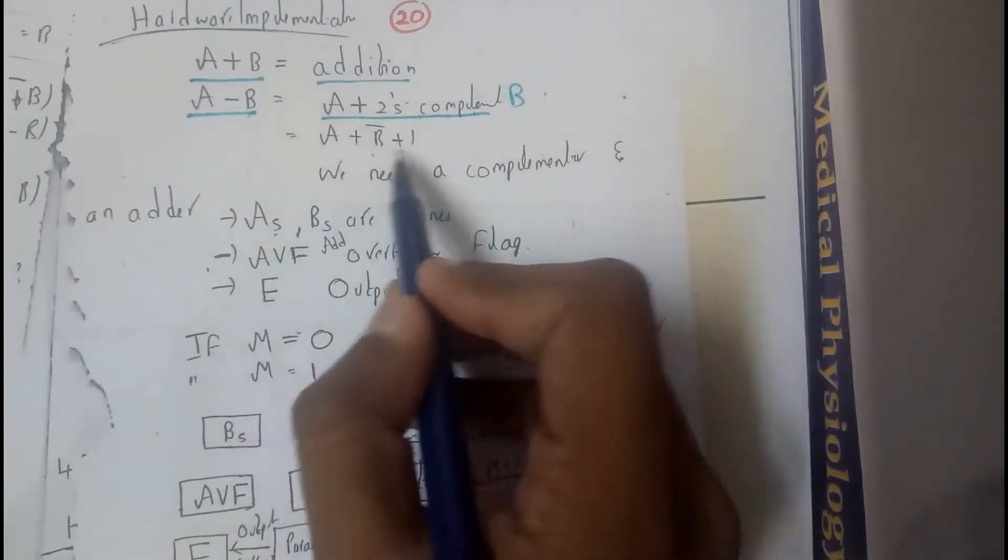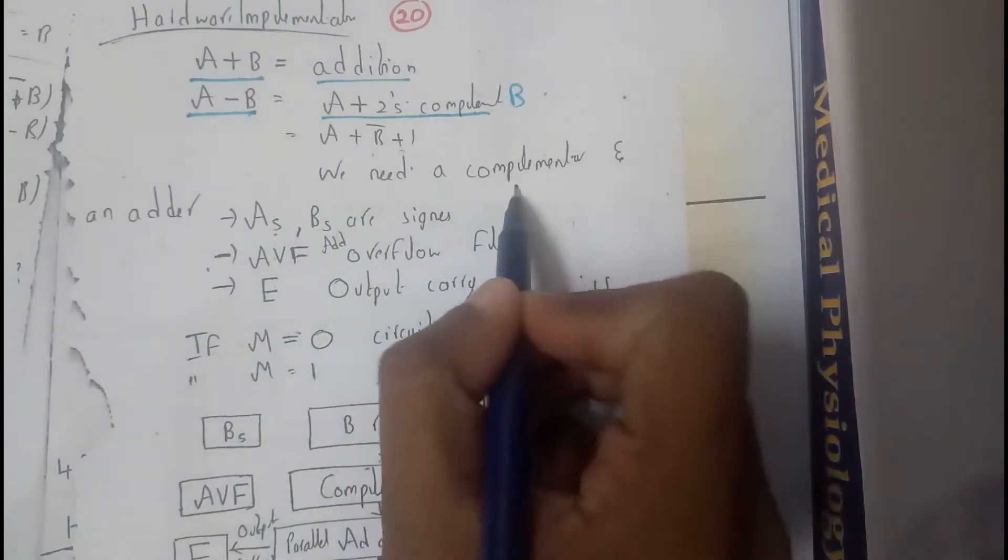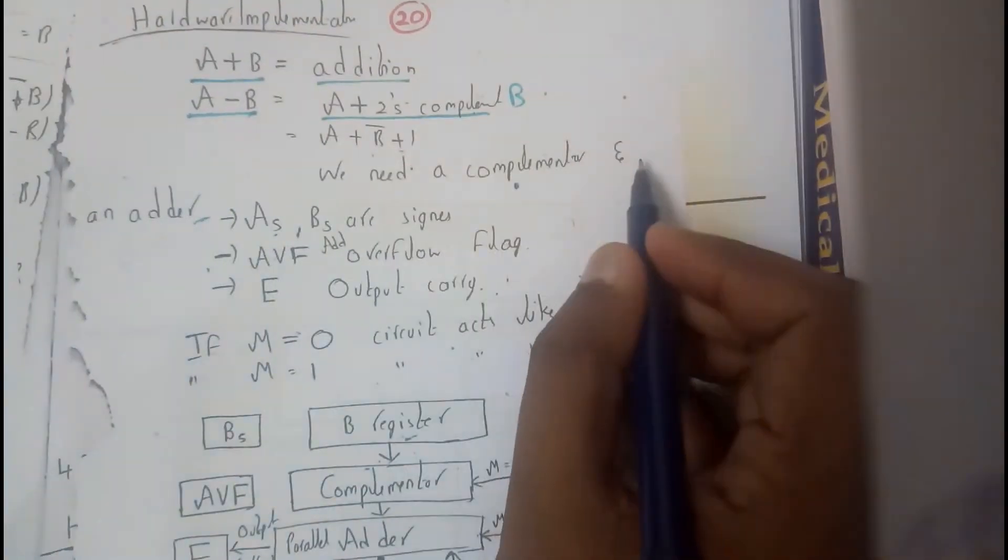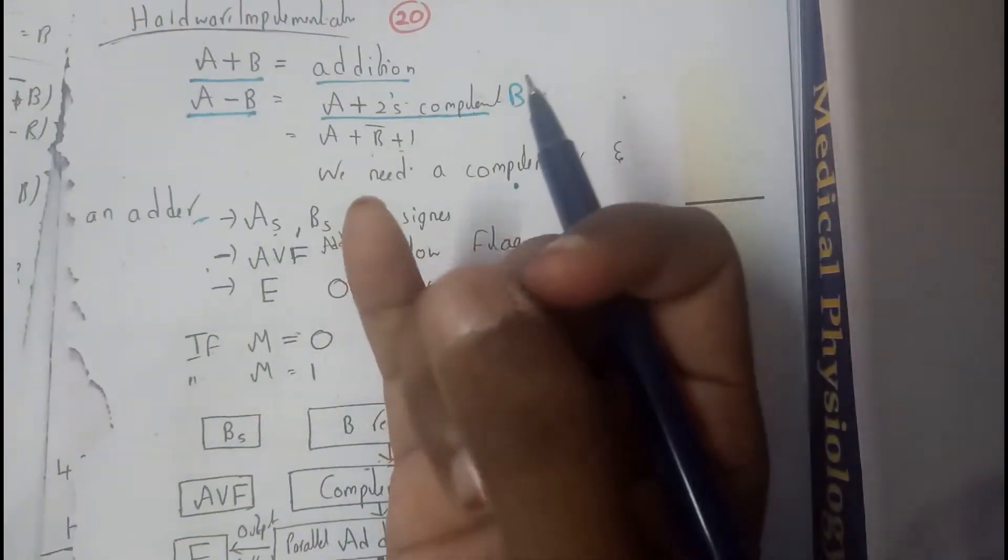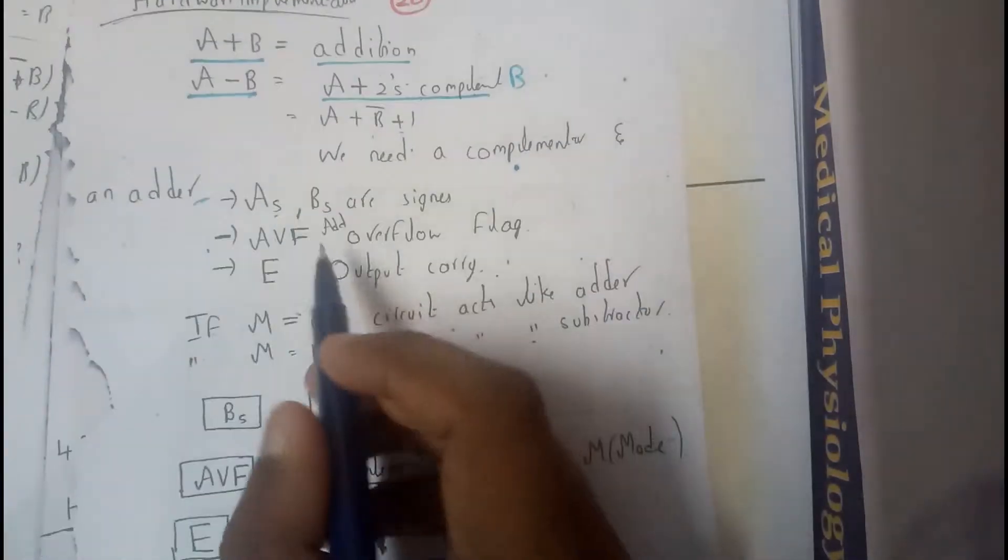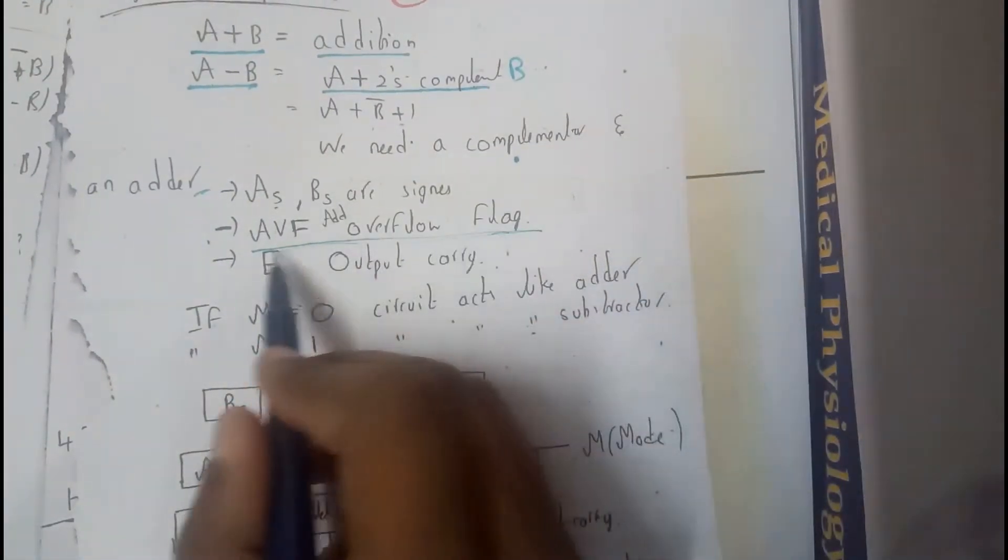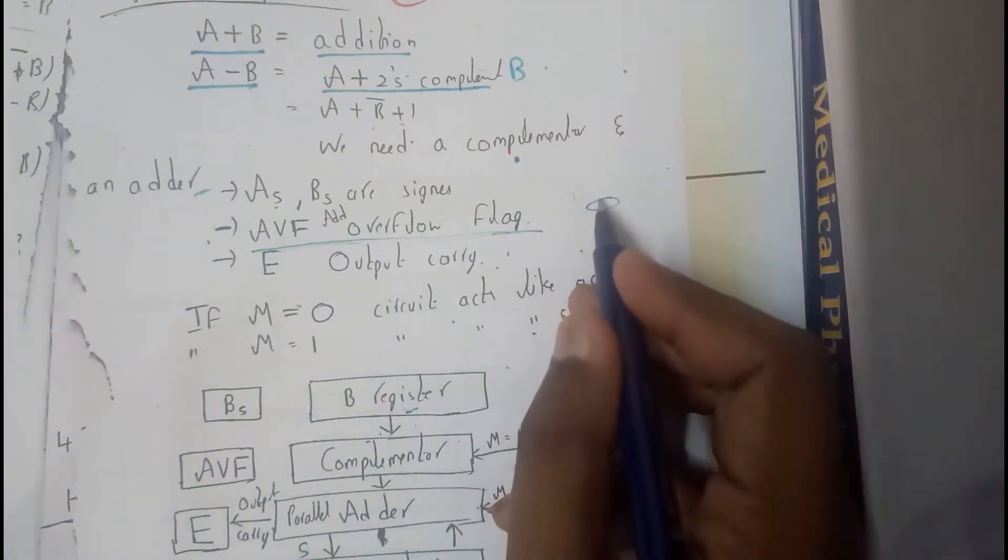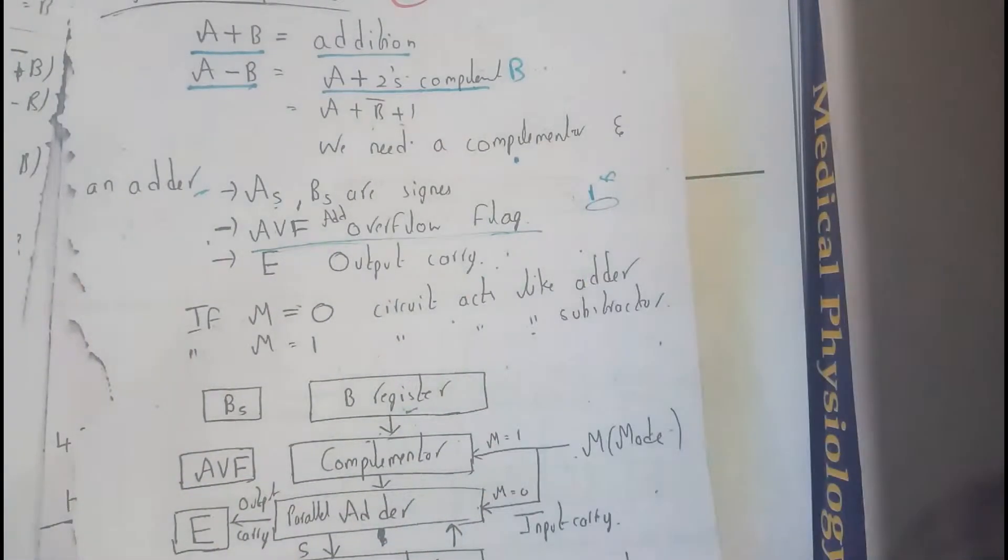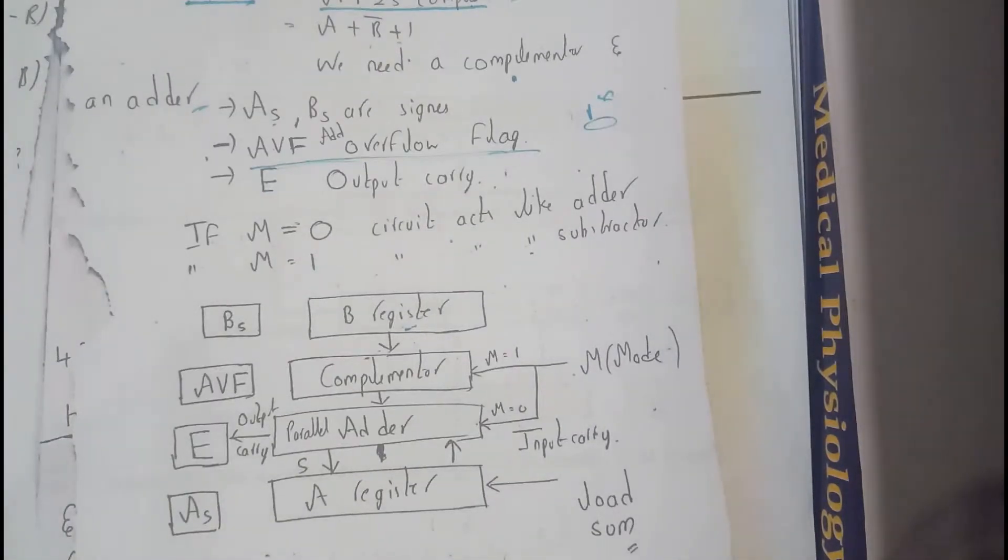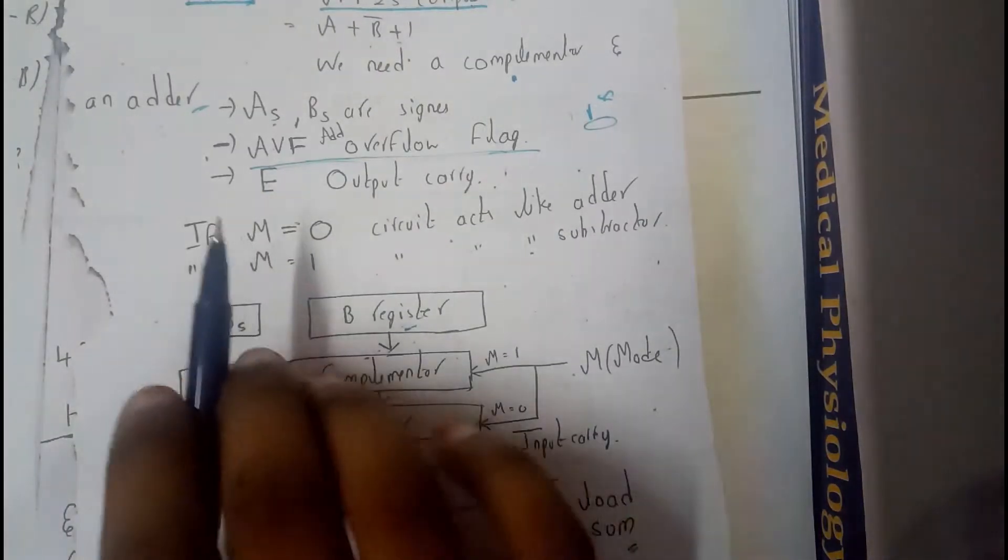So here we can, by clearly observing it, we can say that we need a complementar also, and for normal addition we need an adder. So these are the two things that we need, we need a complementar and adder, and we also need a AVF overflow flag guys, add overflow. Whenever there is an addition and there is an overflow bit, an extra bit, then this flag becomes 1 or else it will become 0.